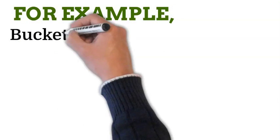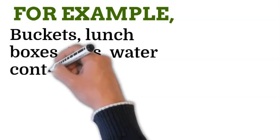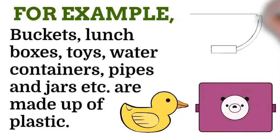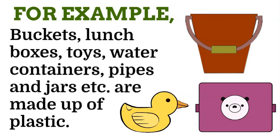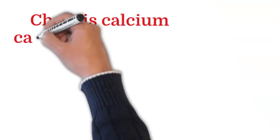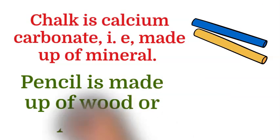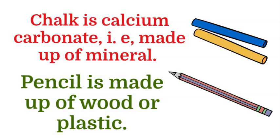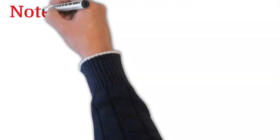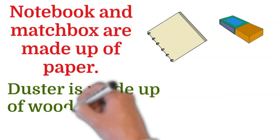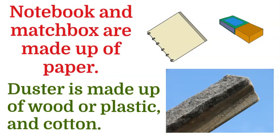For example, buckets, storage boxes, toys, water containers, pipes, and jars, etc. are made up of plastic. Chalk is calcium carbonate, that is made up of mineral. Pencil is made up of wood or plastic. Notebook and matchbox are made up of paper. Duster is made up of wood or plastic and cotton.